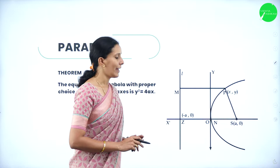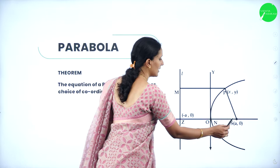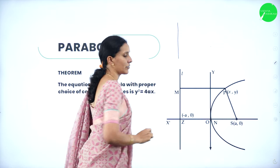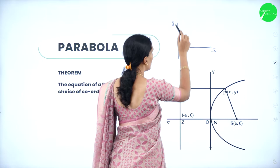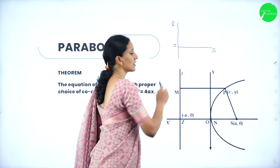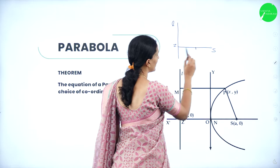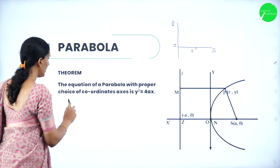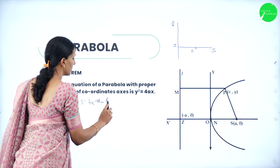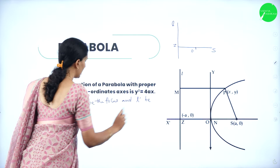Let S be a focus and L be a directrix. Draw SZ perpendicular to the directrix. Let O be the midpoint of SZ, so the distance OZ and OS are the same. Let SZ = 2a, where a is positive, so OZ = OS = a.